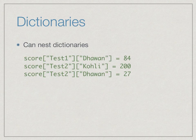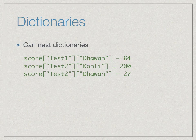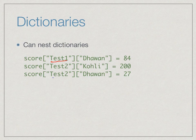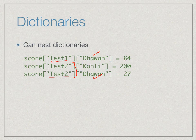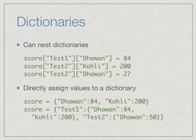Just as we have nested lists where a list contains lists and we use two indices, we can have two levels of keys in a dictionary. To keep track of scores across multiple test matches, instead of having two dictionaries we can have one dictionary where the first key is the match (test_one or test_two) and the second key is the player. So with different first keys we keep track of different scores — for example, Dhawan's score in test_one and test_two, and Kohli's score in test_two.